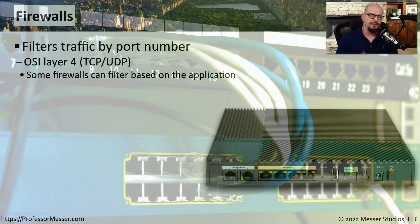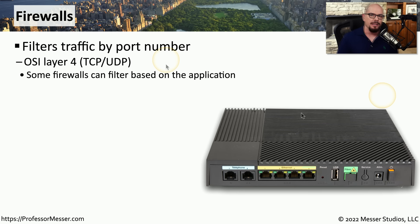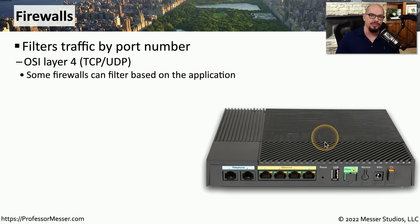A traditional firewall is able to allow or disallow traffic through your network based on IP addresses and port numbers. Since those TCP and UDP ports operate at layer 4 of the OSI model, it's common to refer to firewalls like this as OSI layer 4 devices. These days, it's increasingly common to see firewalls that understand application layer traffic, in which case the firewall would be a layer 7 device.